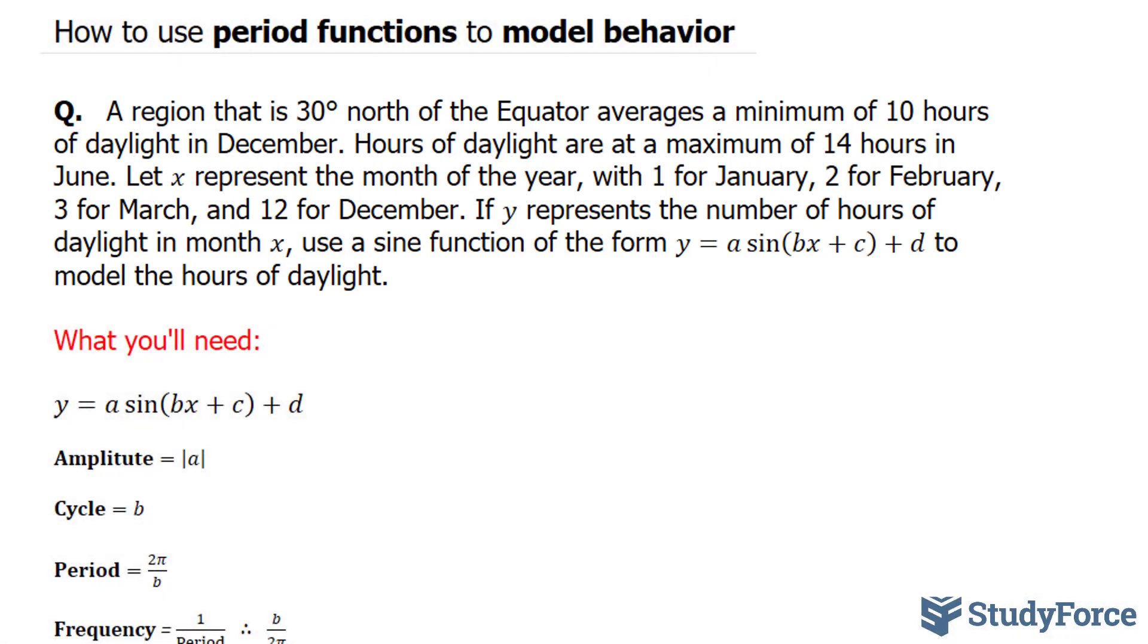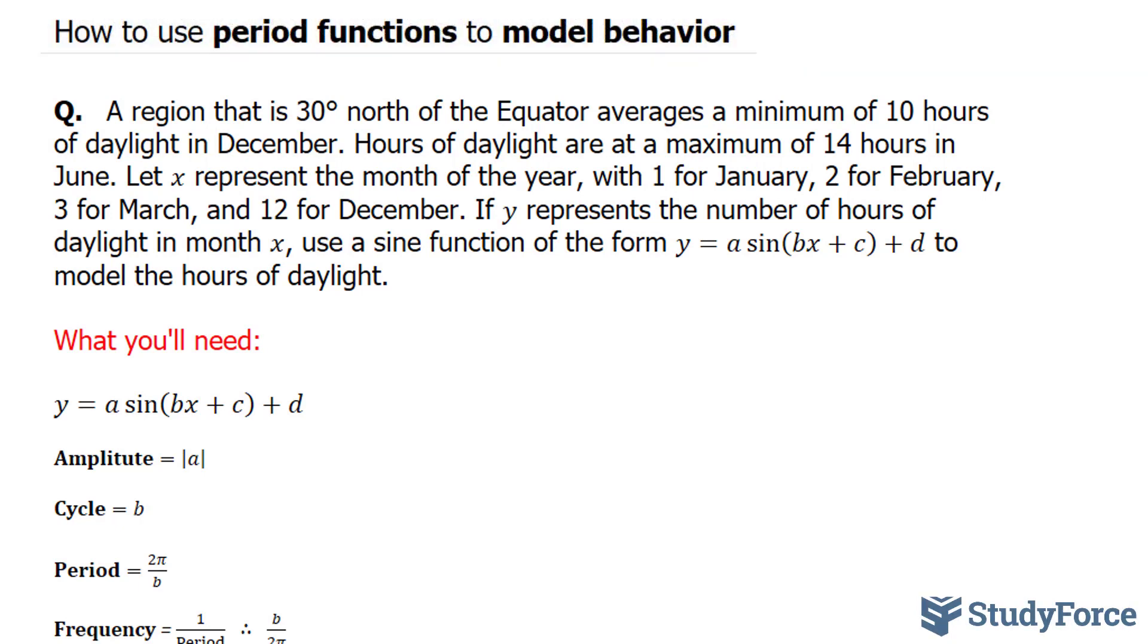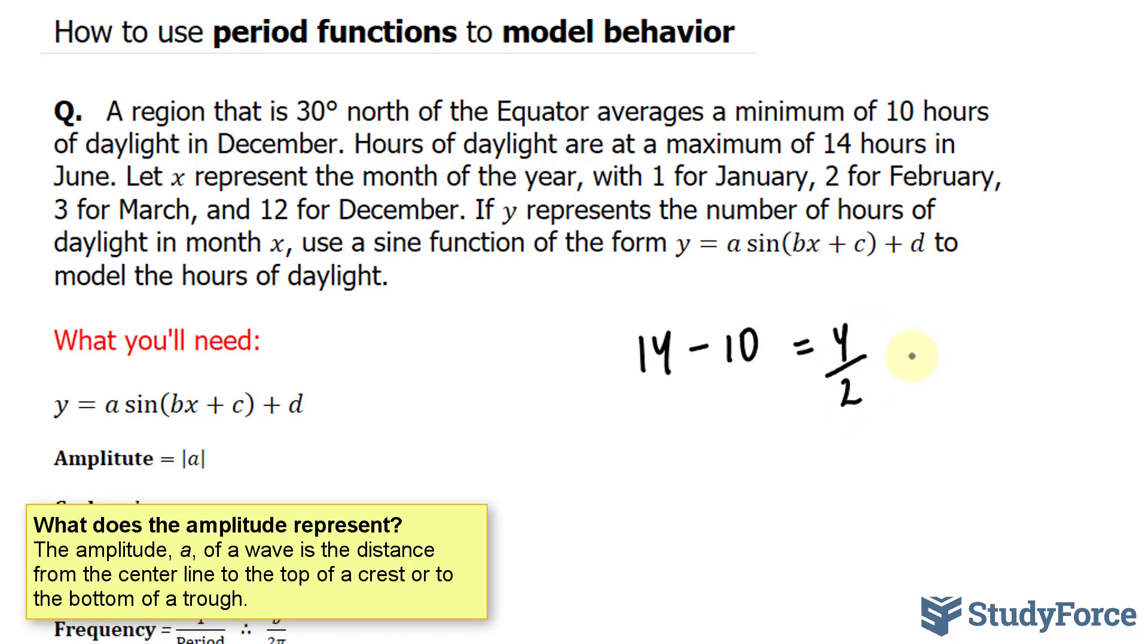The first thing we can do is find the amplitude. We know that it goes from a maximum of 14 to a minimum of 10 in December. To find the amplitude, we take 14 minus 10, that equals 4, and divide by 2. So 2 represents our amplitude, and make sure that your amplitude is positive, and it is.